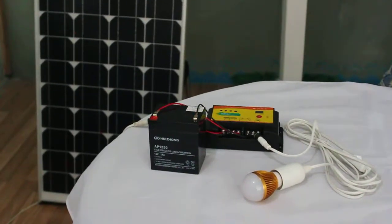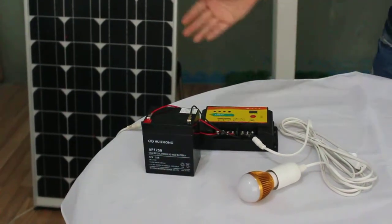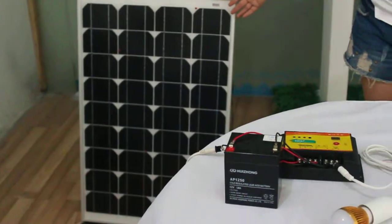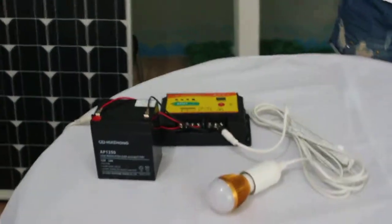This is our solar system, including controller, battery, 3V LED lamp and 15V solar panel. Let me introduce how this system works.